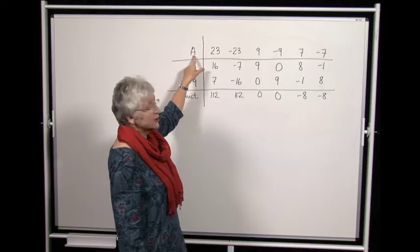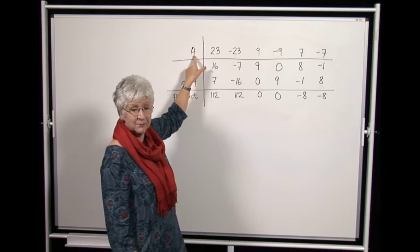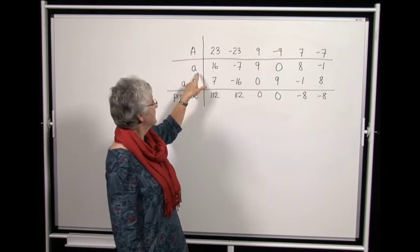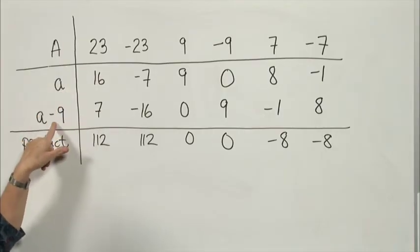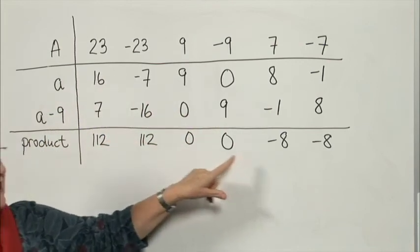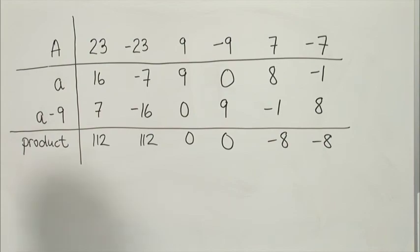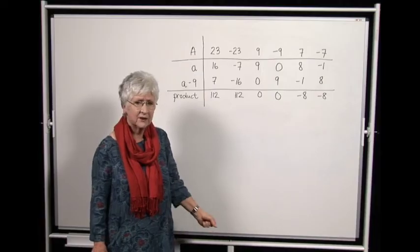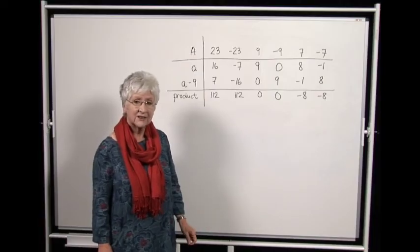And we check because capital A was the sum of Aries' two numbers. Here is his first and his second number, and these all work. And we see that there are three solutions to this problem. The product is 112, 0, or negative 8.